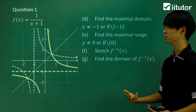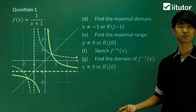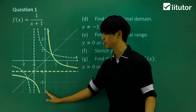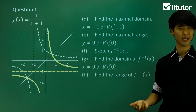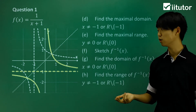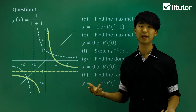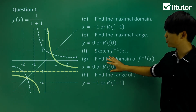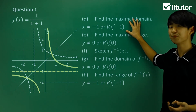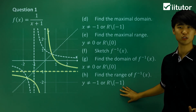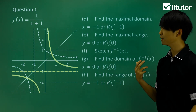From there we can answer domain and range questions. Part g asks for the domain of the inverse function — looking at the graph, x cannot equal 0, so the domain is x ≠ 0. For the range of the inverse function, y cannot equal -1, so the range is y ≠ -1. Notice that the domain of the original function becomes the range of the inverse, and the range of the original function becomes the domain of the inverse — that's the key relationship with inverse functions.